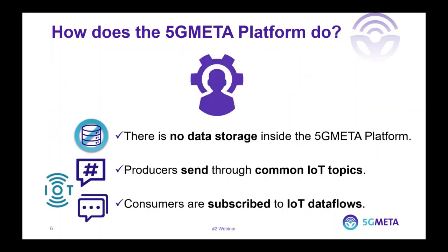Essentially, third parties can consume data from sensors and devices in real time, or produce messages received by sensors and devices in a specific area. This way, 5G Meta is a sophisticated IoT messaging platform connecting sensors, devices, and CCAM services. There are three important aspects to consider: first, data is sent to consumers in real time, meaning 5G Meta doesn't perform any cache or storage. Second, sensors and devices use common topics depending on the type of data they want to share. Third, consumers from third parties have individual topics configured in the 5G Meta platform, so each developer will have a set of IoT topics produced specifically for them.